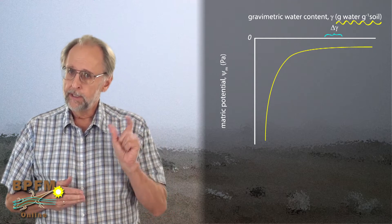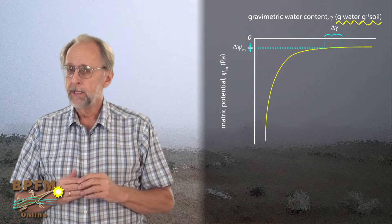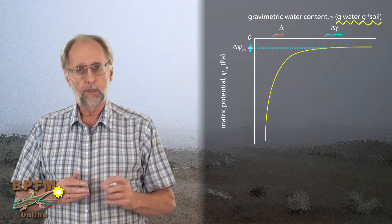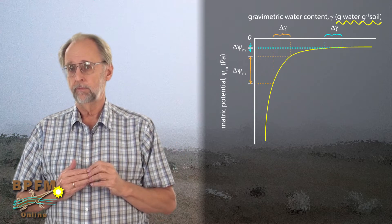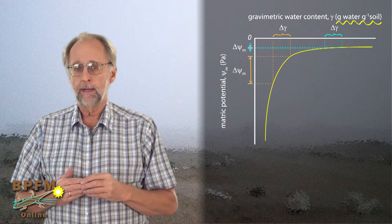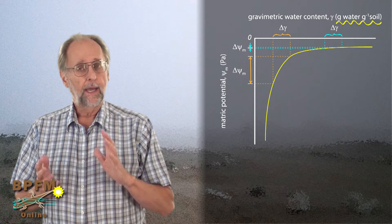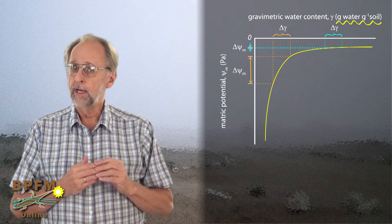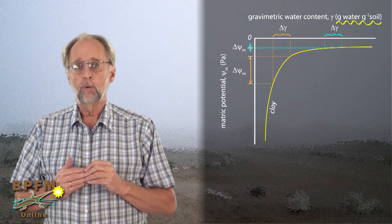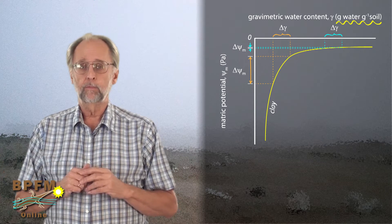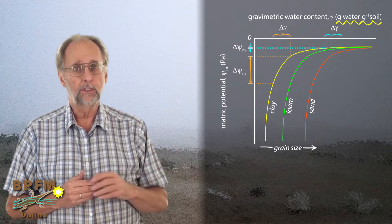In wet soils, a particular change of water content, as might happen when rain percolates into the soil, changes matrix potential only slightly. In dry soils, in contrast, the same change of water content will produce a very large change of matrix potential. This same pattern applies to most soils, but the relationship will differ depending upon soil type, and it varies with the typical grain size of the soil. Clays, which have typically small soil grains, will have matrix potential curves shifted to the left, whereas loamy and sandy soils, which have larger grain sizes, will have their matrix potential curves shifted to the right.